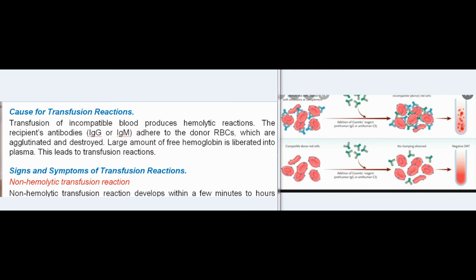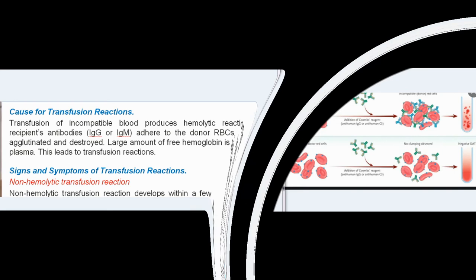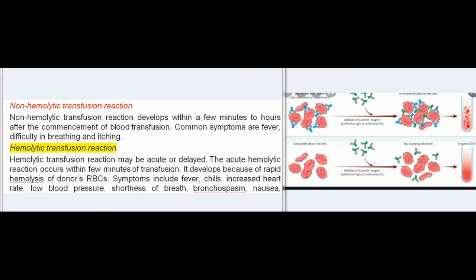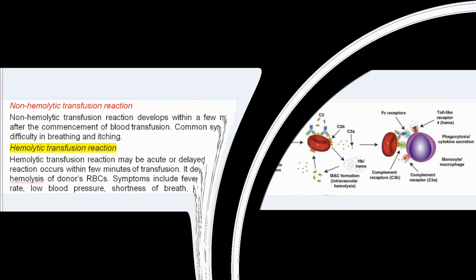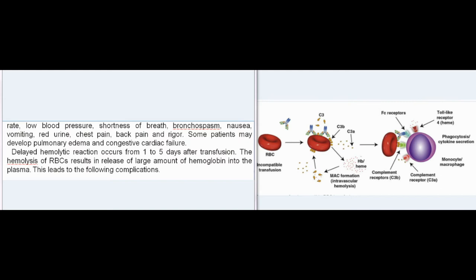Signs and Symptoms of Transfusion Reactions: Non-hemolytic transfusion reaction develops within a few minutes to hours after commencement of blood transfusion. Common symptoms are fever, difficulty in breathing, and itching. Hemolytic transfusion reaction may be acute or delayed. The acute hemolytic reaction occurs within a few minutes of transfusion due to rapid hemolysis of donor's RBCs. Symptoms include fever, chills, increased heart rate, low blood pressure, shortness of breath, bronchospasm, nausea, vomiting, red urine, chest pain, back pain, and rigor. Some patients may develop pulmonary edema and congestive cardiac failure. Delayed hemolytic reaction occurs from 1 to 5 days after transfusion, with hemolysis of RBCs releasing large amounts of hemoglobin into the plasma.